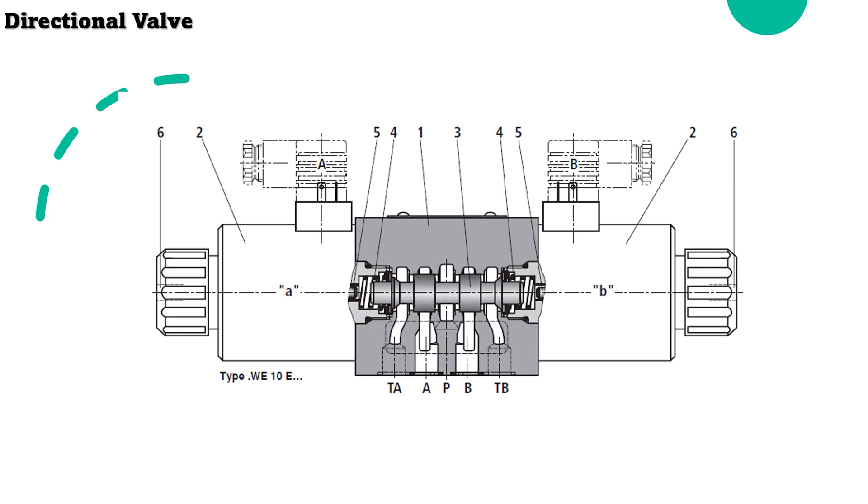These directional valves basically consist of a housing where the spool and spring are installed.